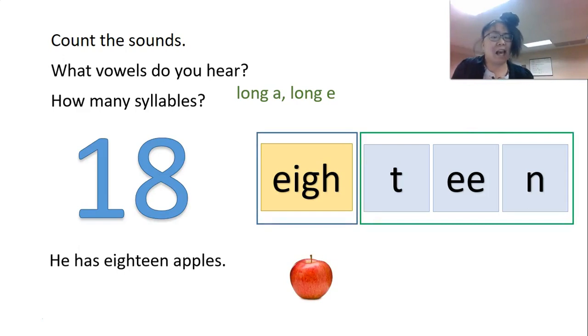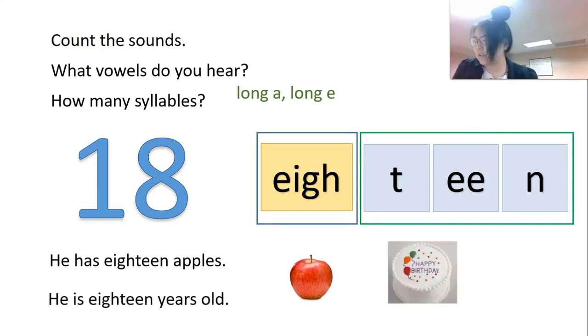So he has 18 apples. He is 18 years old, right? So E, I, G, H.